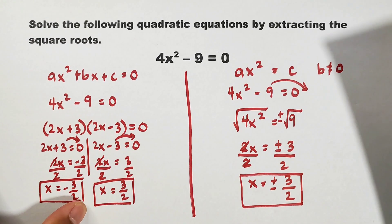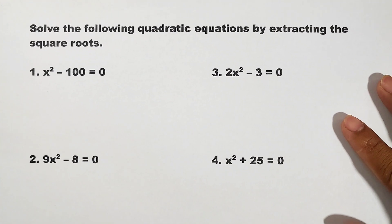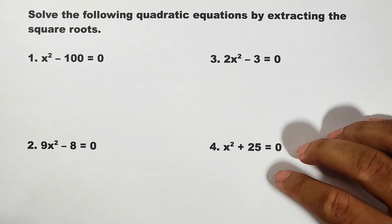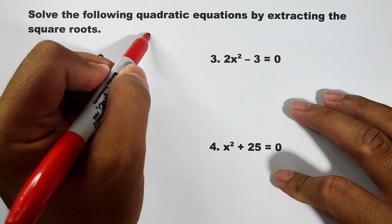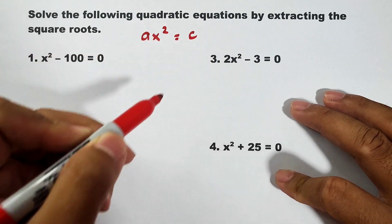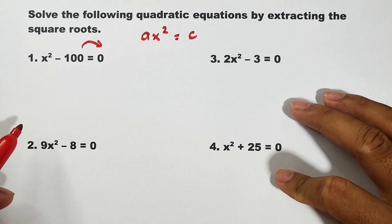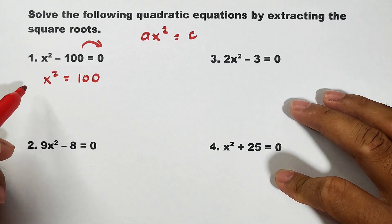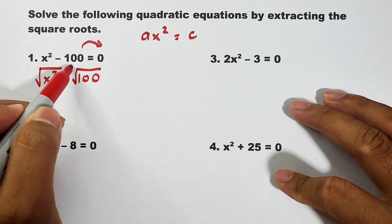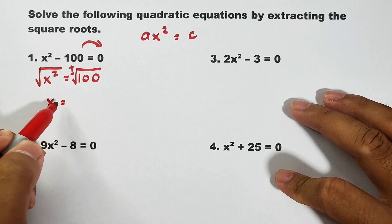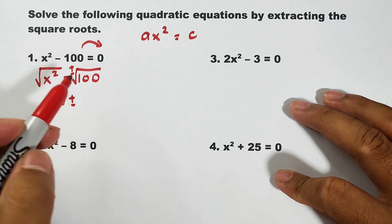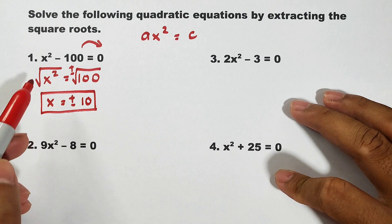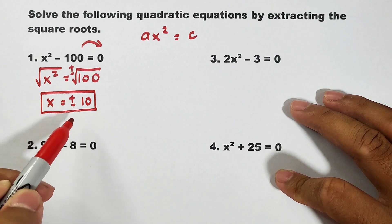Now let's move on to other examples using solving equations by extracting the square roots. For number 1, we have x squared minus 100 = 0. Following the pattern ax squared = c, transpose -100 to the other side: x squared = 100. Get the square root — don't forget to put positive and negative. The square root of x squared is x, and the square root of 100, since it is a perfect square, is 10. The solutions of this quadratic equation are positive or negative 10.